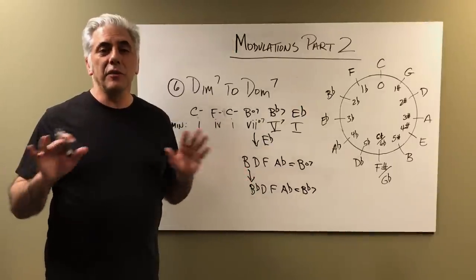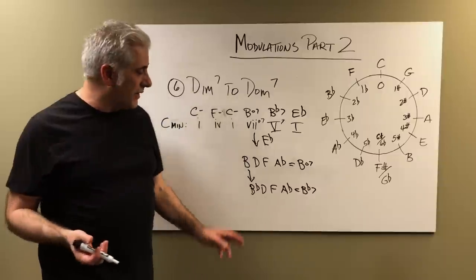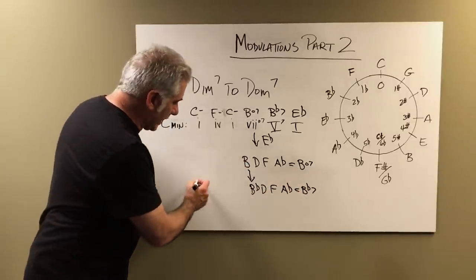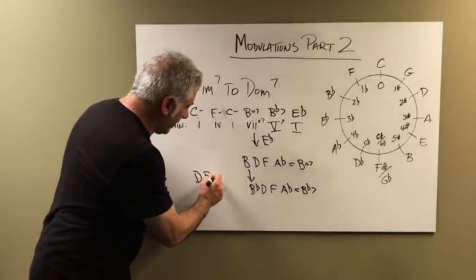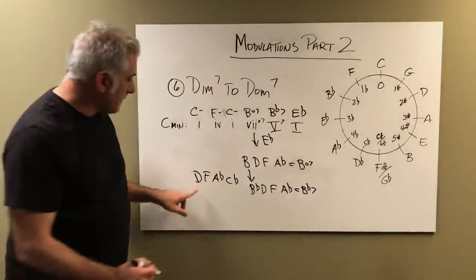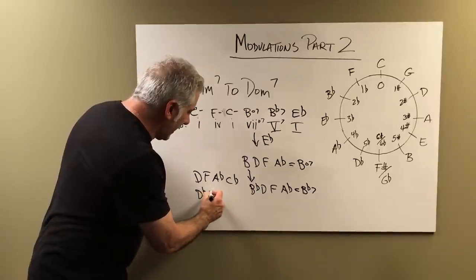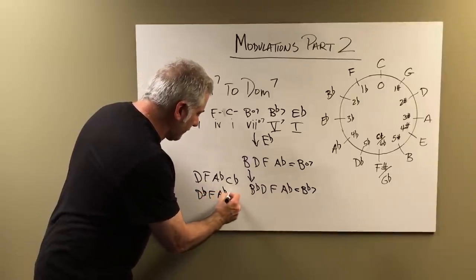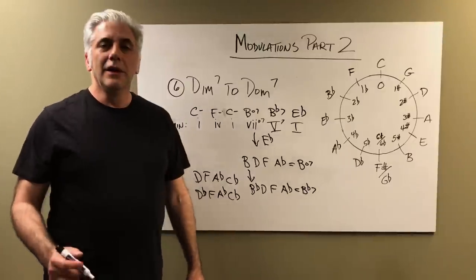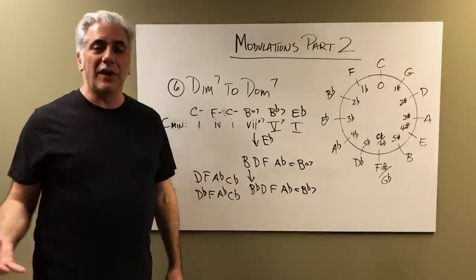Any diminished seventh chord in any inversion — if you drop the bass note down a half step, it becomes a dominant seventh. I can take any inversion of this B diminished seven. I can take D, F, A flat, C flat — because C flat is the other name for B — drop this down a half step to D flat, and then I have D flat, F, A flat, C flat, which is of course a D flat seven chord. So that would work for any diminished seventh chord, and then that becomes the five chord in the new key.